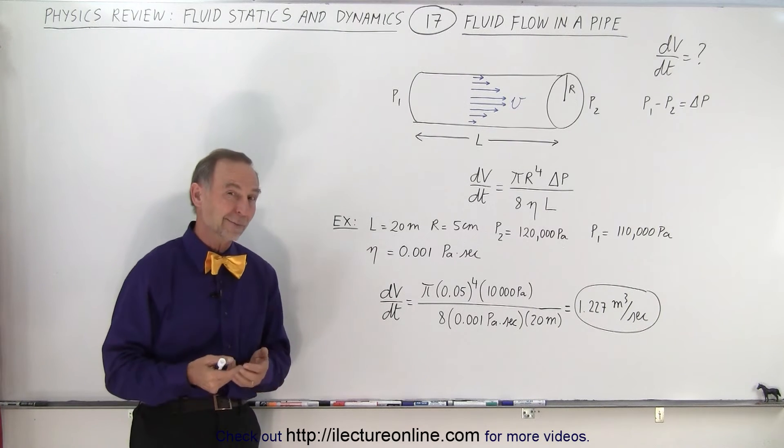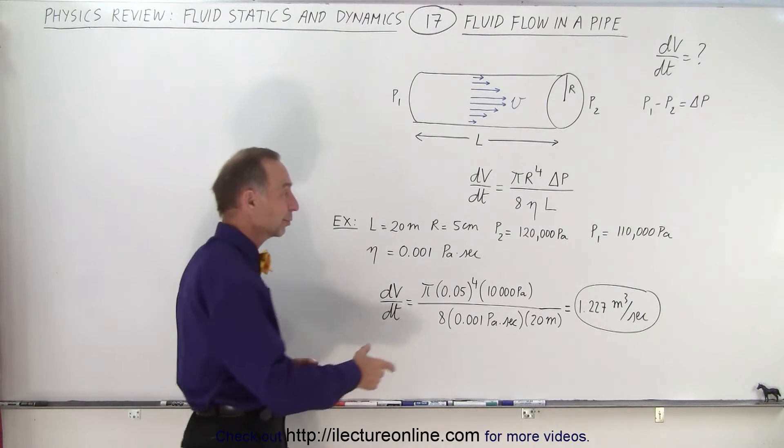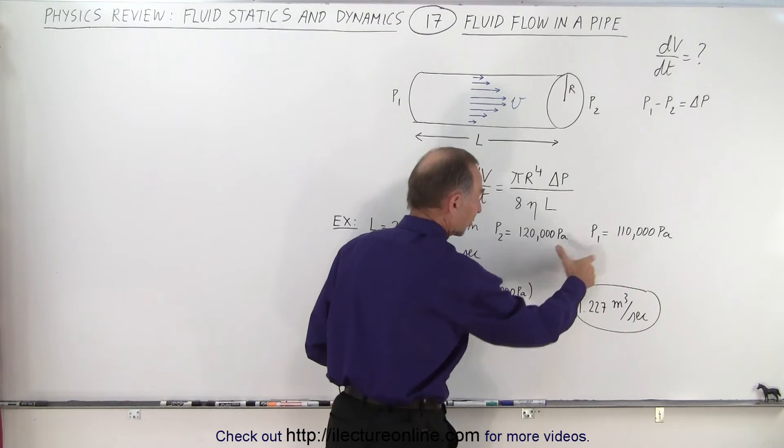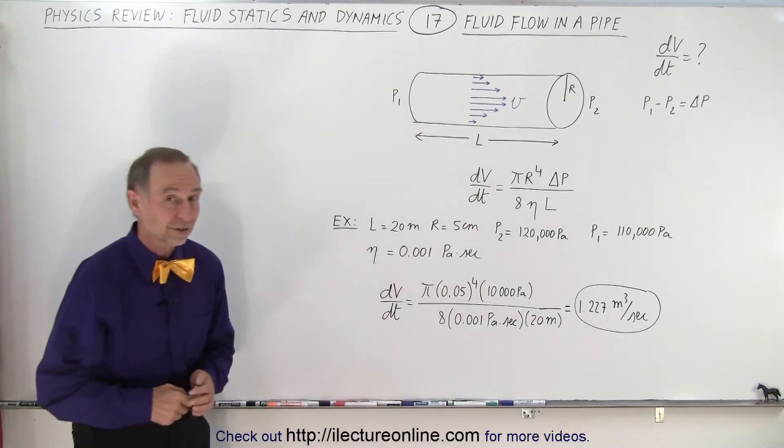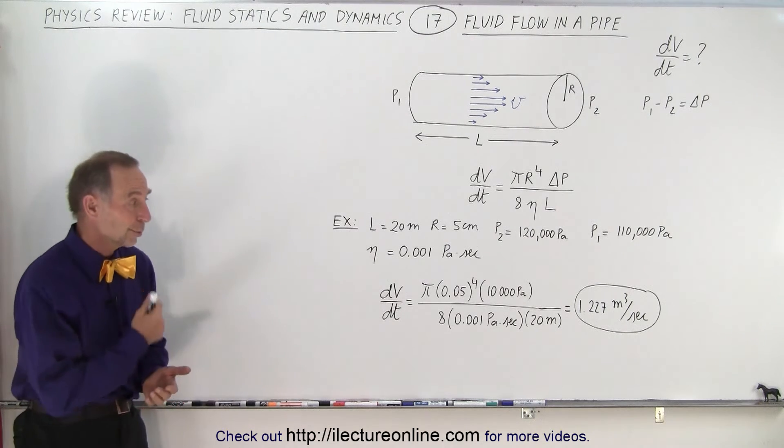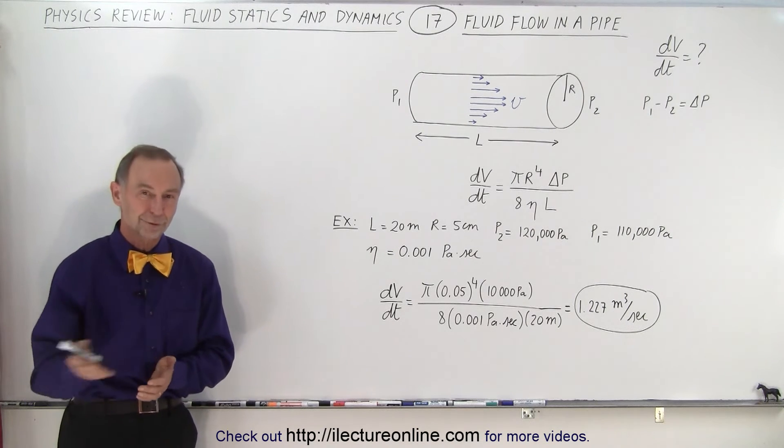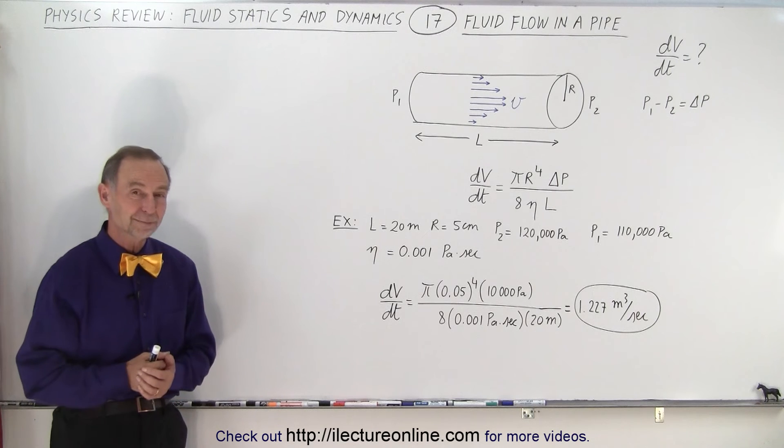A more realistic number is probably about one-tenth as much, but then of course we can simply drop the pressure difference to just 1,000 pascals instead of 10,000 pascals, and you would get one-tenth of the fluid flow through the pipe, and that is how it's done.